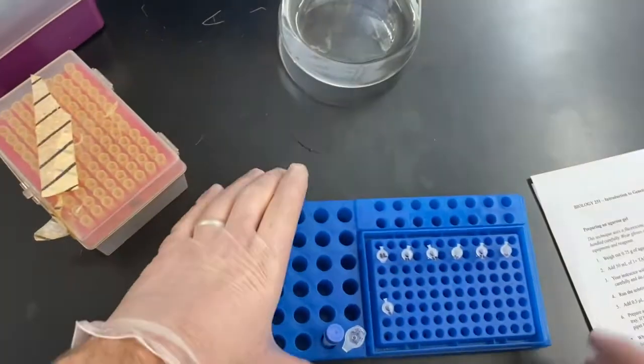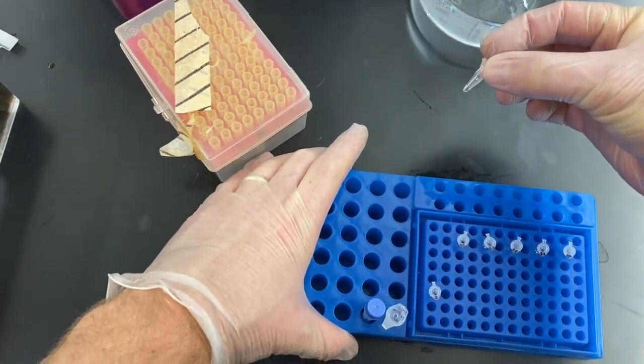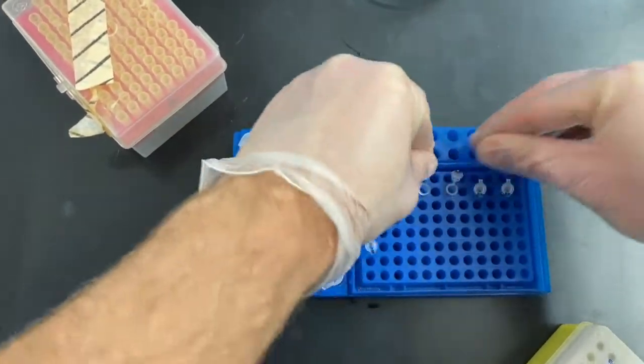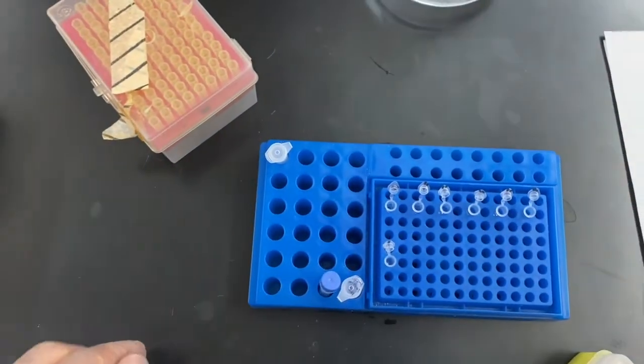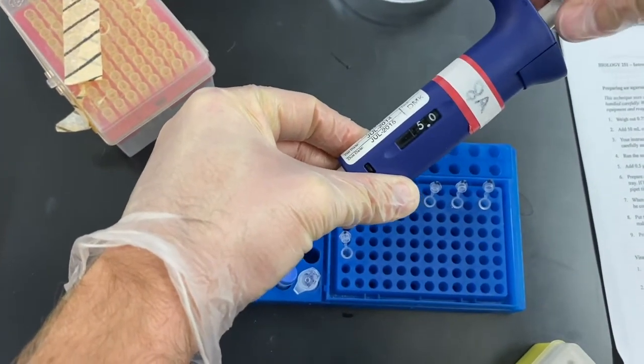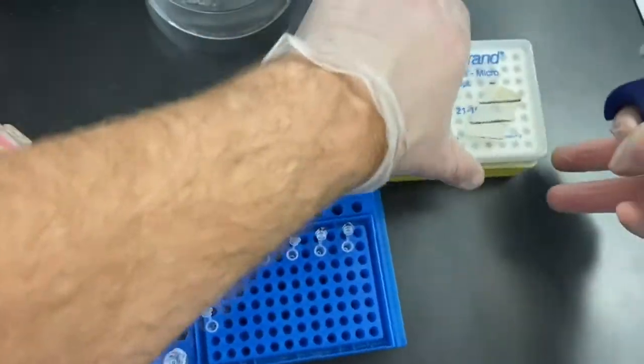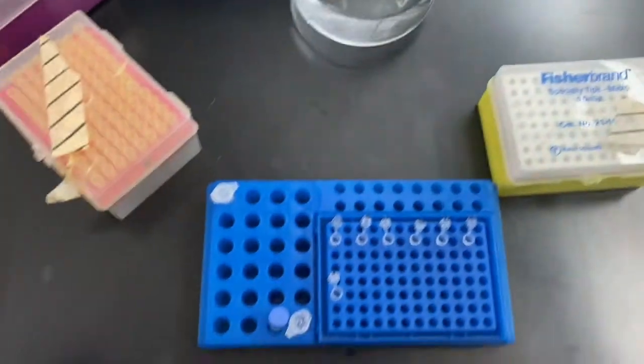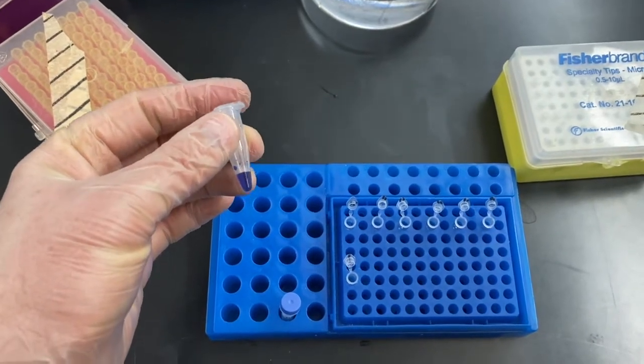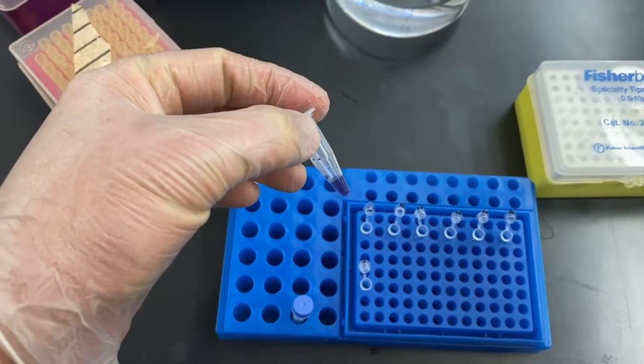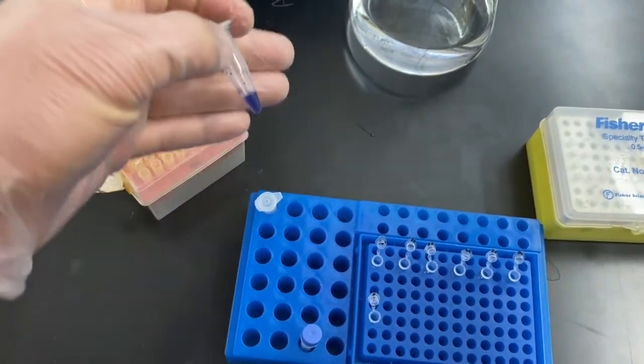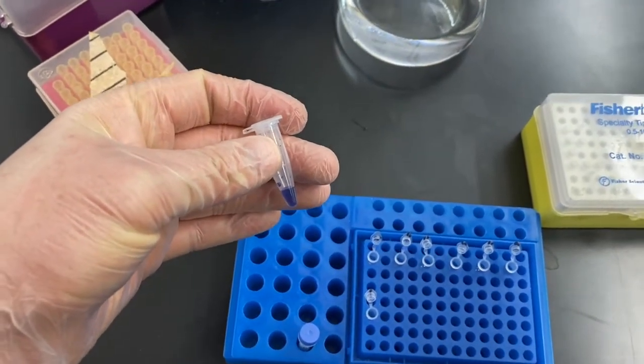So here are the samples we have. We got them out of the thermal cycler. They're labeled. And I'm going to add to these the loading dye. Five microliters of that. The loading dye serves a couple of purposes. It makes the liquid overall a little bit heavier. It makes it visible in this clear liquid solution. And the purple on here is not accidental. That purple actually is going to run as we put the electrical current on there.